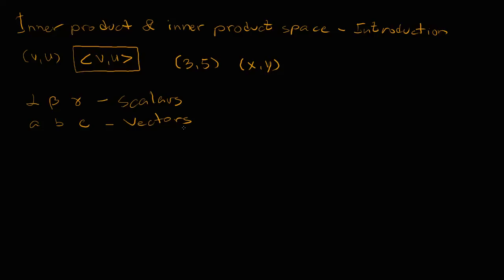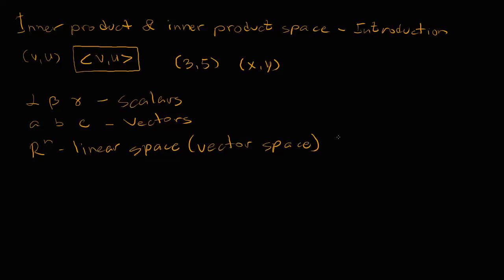By this point, you should be familiar with the notion of a linear space. For example, we have the linear space R to the N. It's a linear space, also known as a vector space. This linear space contains all the vectors that have N elements, so we can say they are N-dimensional, and all of those elements are real numbers — by real, I mean not complex. So, we can say that R^N is a linear space over the field of real numbers.